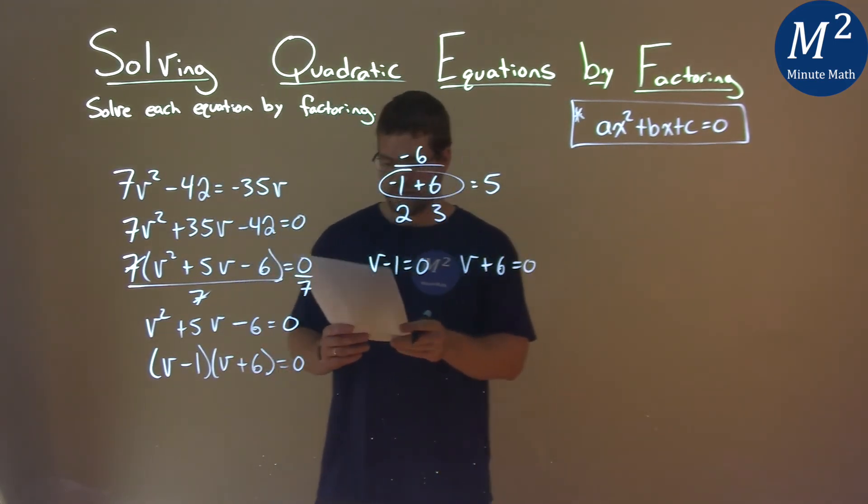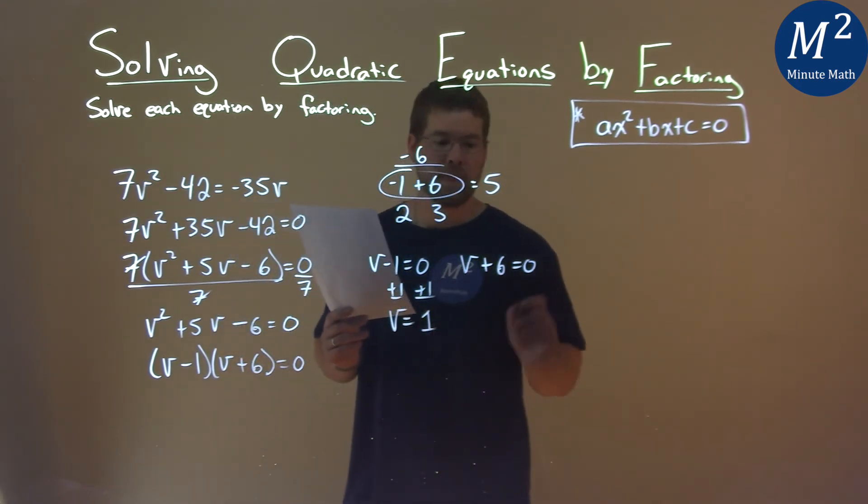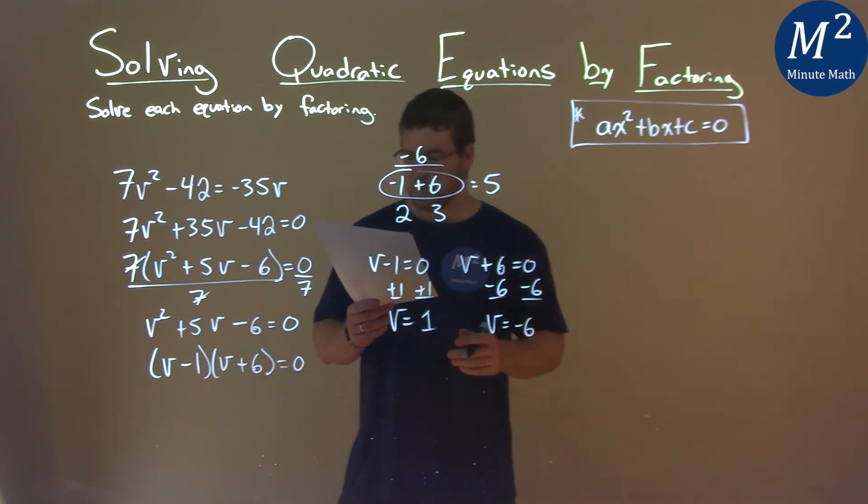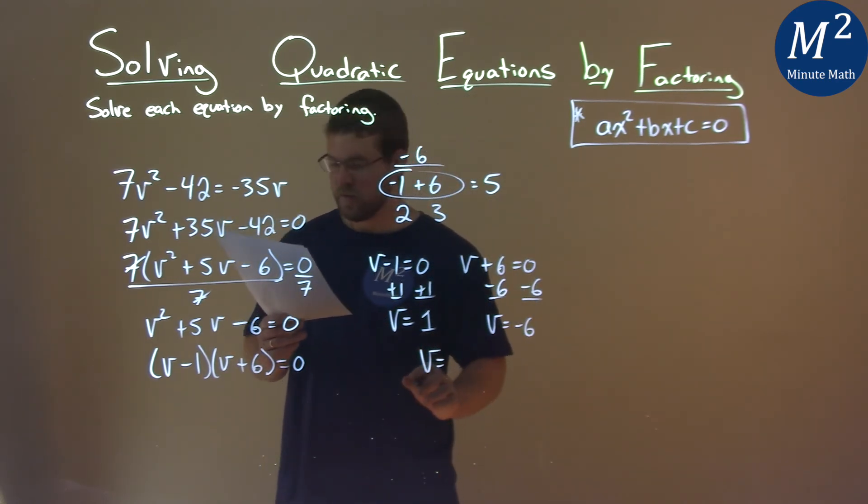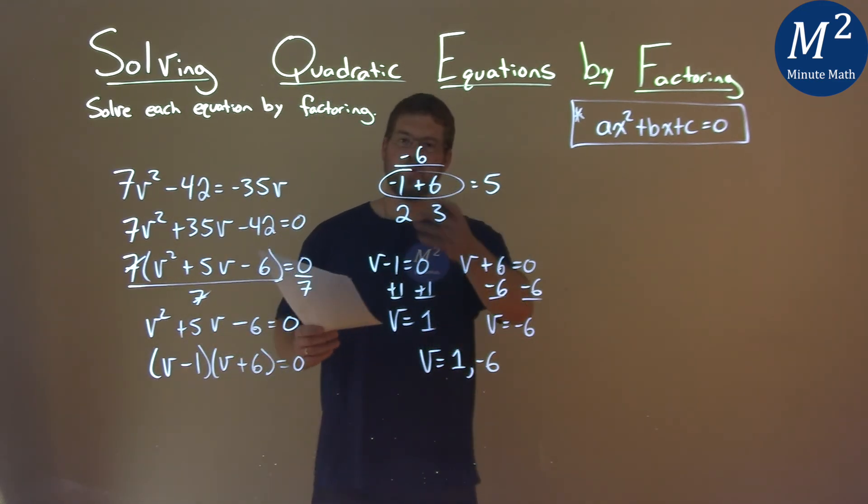And now we solve each one. I add 1 to both sides, not too bad, and v = 1. Subtract 6 from both sides, and v = -6. So my two solutions here, I'm going to write as one statement: v = 1 and v = -6. And that is our final answer.